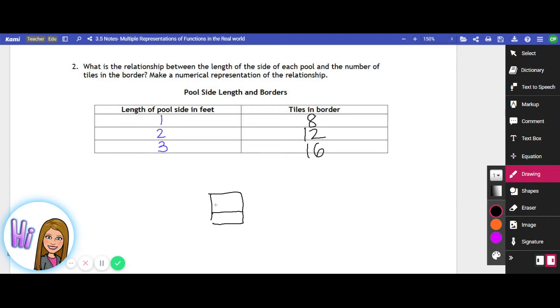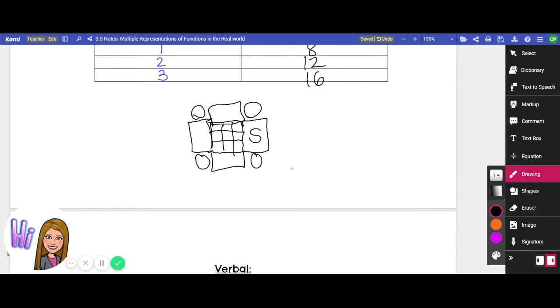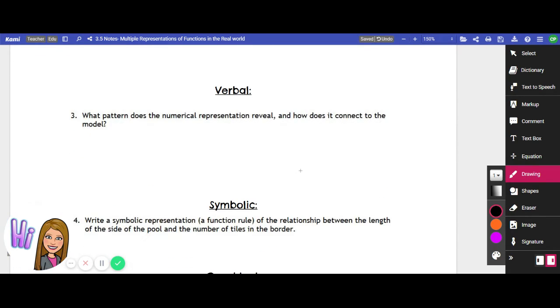It was kind of that whatever our pool side was, it was somewhat like that number times four of these, but then we also had these individual corner pieces. So a way that you would describe this using words is to describe it like for each additional foot of pool length.